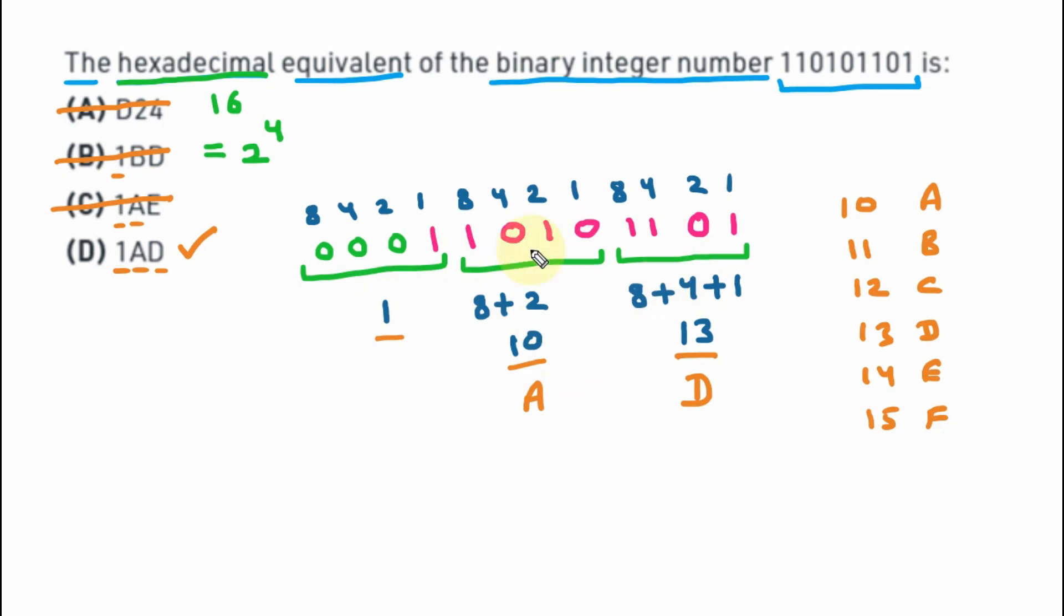So by this shortcut technique, we can find the hexadecimal number out of the binary number. So that's all for this lecture. Thank you.